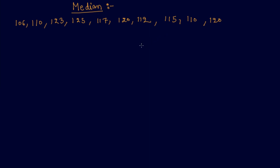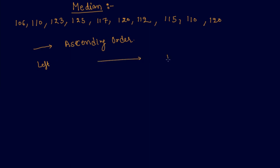First, what I will do is arrange the numbers in ascending order. I hope you remember what ascending order is from my lecture on real numbers. If you don't remember, kindly watch that video. Ascending order means when going from left to right, the numbers keep on increasing.